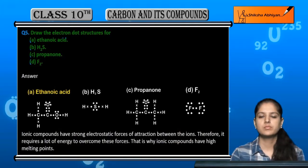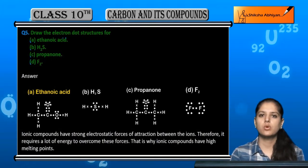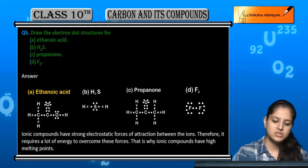Let's start with the ethanoic acid formula, CH3COOH. First of all,